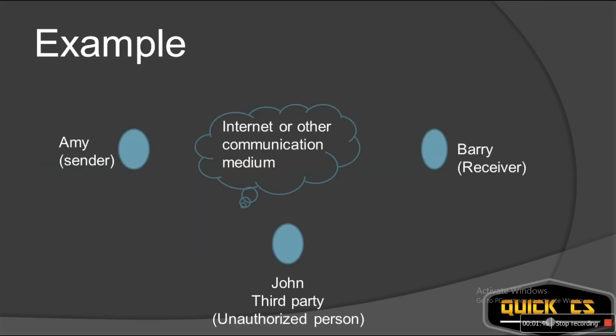Let's look at an example. Suppose Amy is the sender and Barry is the receiver of the message. The message is not encrypted — it is a plain simple message. Amy sends the message to Barry, and John, the third party unauthorized user, accesses the content. But he does not do anything with it — he just accesses the message.